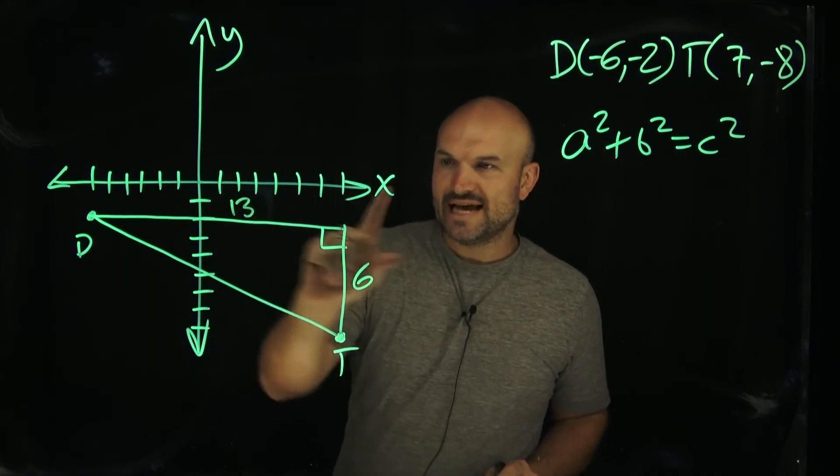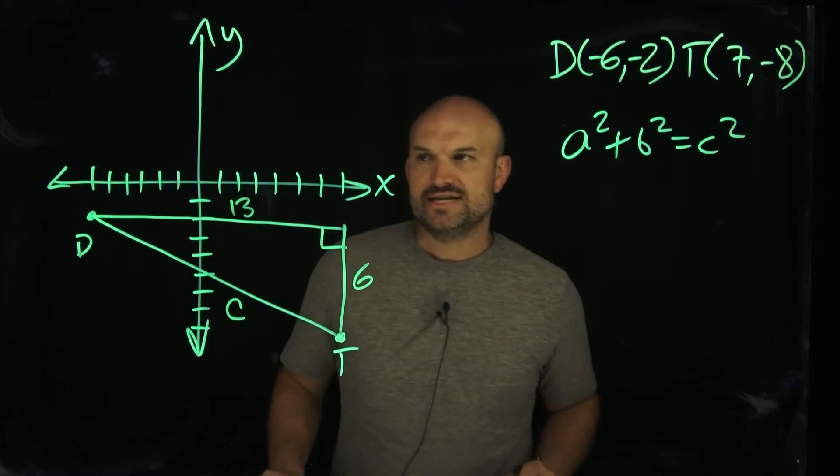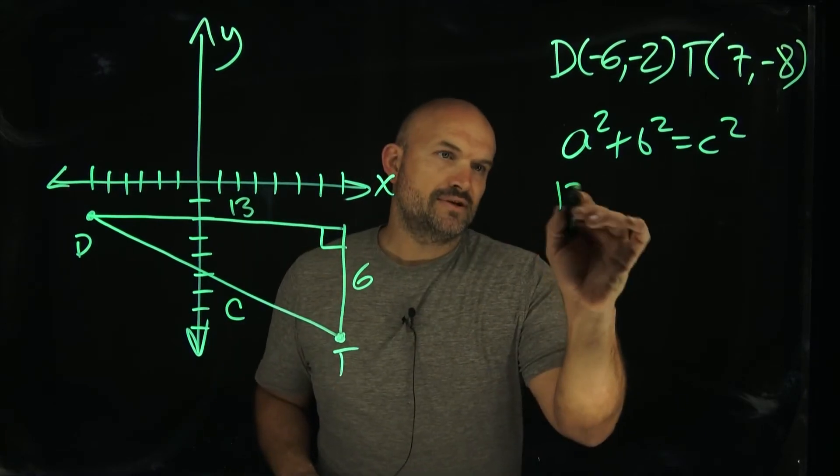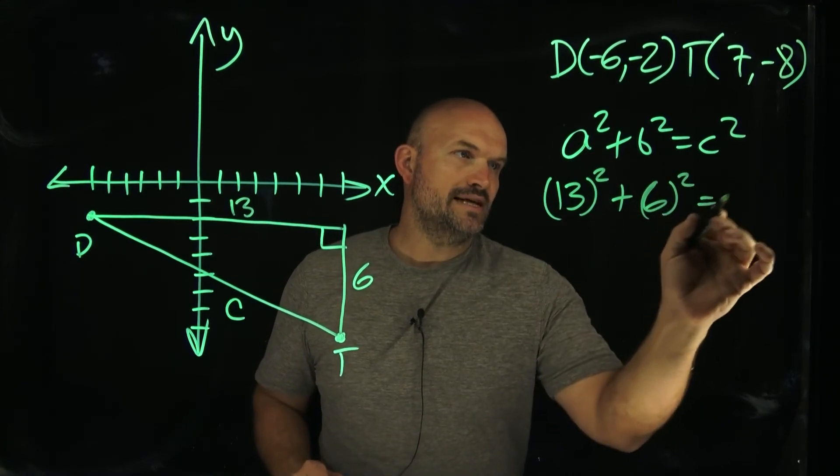So you can see we have a right triangle, we have two legs. And all we're trying to find now is our hypotenuse, which is going to be our c. So in this case, we have a 13. So I'm just going to write that a 13 squared plus a six squared is going to equal to a c squared.